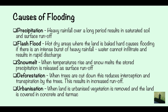Then urbanisation: when land is urbanised, vegetation is removed so deforestation occurs, and the land is covered in concrete and tarmac, meaning water cannot infiltrate through it, which also results in rapid discharge.